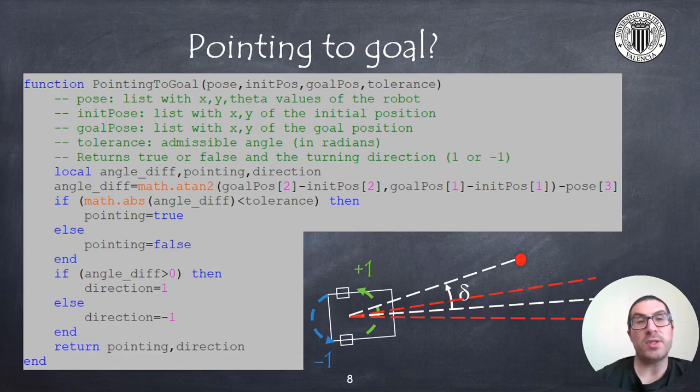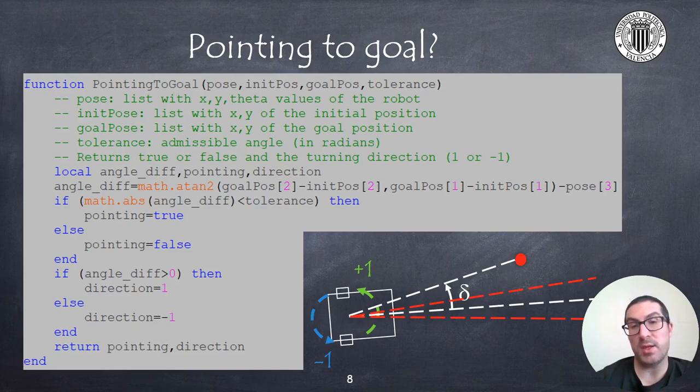Let's start with the pointing to goal function. The purpose of this function is to return, on one hand, a boolean variable that indicates whether the robot is pointing at the target within an angular tolerance. This tolerance is basically represented with the red lines in the figure, as you can see. Also, this function returns the direction of rotation that the robot should take in order to point towards the goal. So it will return plus one if we need to make a left turn, or it will return minus one if we need to make a right turn.